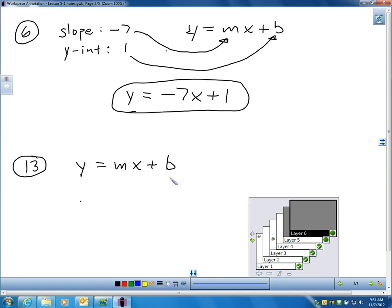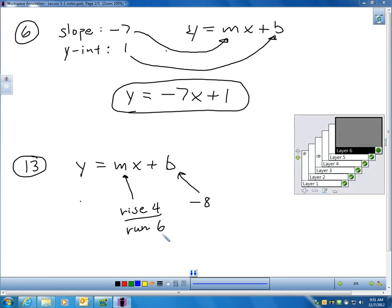Look carefully at the slope. You can see it labeled in red. We're rising 4 and running 6, so my slope, I know, is 4/6.